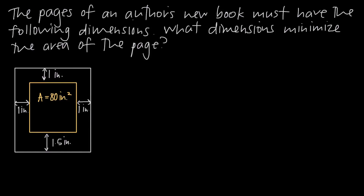In this video, we're doing another applied optimization problem. In this particular problem, we've been told that the pages of an author's new book must have the following dimensions, shown in this diagram here, and then we've been asked what dimensions minimize the area of the page. So first of all, let's look at this diagram here.